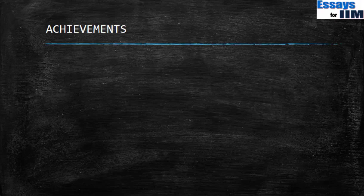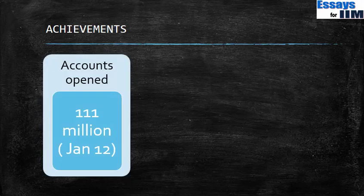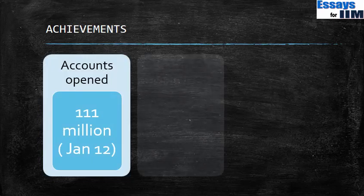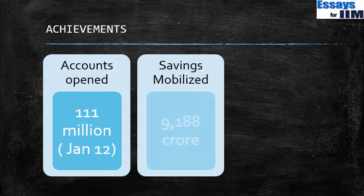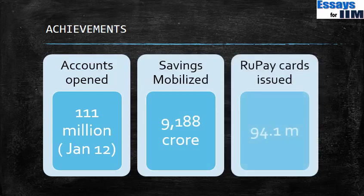To give some data on achievements under Jan Dhan Yojana: 111 million bank accounts have been opened as of January 12th. Approximately Rs. 9,000 crore of savings have been mobilized. And 94 million RuPay debit cards have been issued. These are very impressive numbers to be aware of.